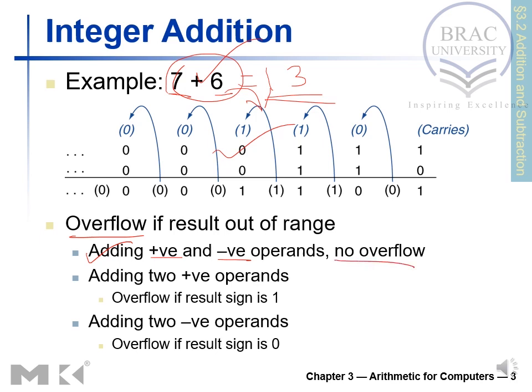Now, when can overflow occur? The first point: adding one positive and one negative operand — there will be no overflow. For example, if we have a positive value and add a negative value, overflow cannot occur. So we do not have to worry when this scenario arises where we have one positive and one negative value being added — the result will be positive because the positive is the bigger number.